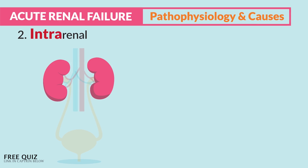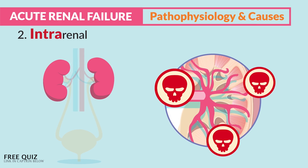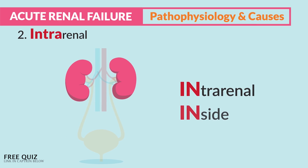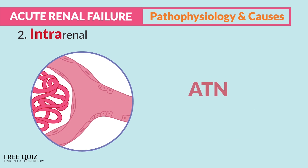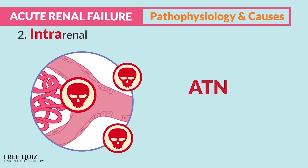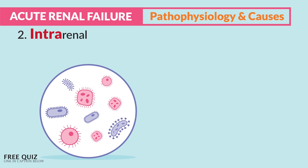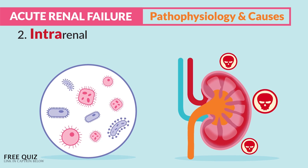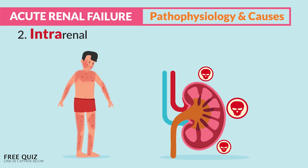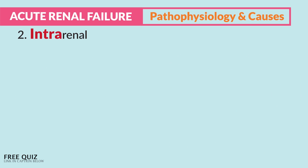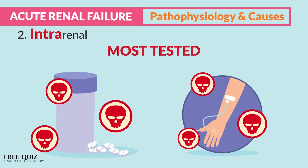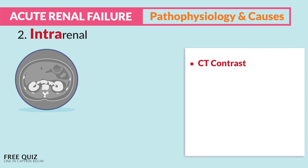Next is intra-renal — direct damage inside the kidney itself. This is far more serious and is also referred to as ATN, acute tubular necrosis — just think ATN requires immediate attention. It's typically caused by infections resulting in glomerulonephritis or autoimmune diseases like lupus, where the body attacks itself resulting in nephrotic syndrome.